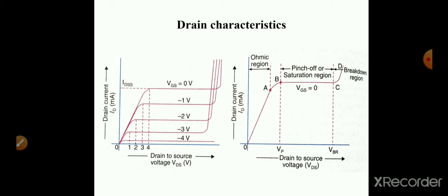Curve AB obeys the inverse square law rate — when voltage increases, current increases slowly. At point B, pinch-off occurs and constant current flows. From B to C is the saturation region or pinch-off region, where constant current flows. When we increase the drain-source voltage further, at point C, breakdown occurs and a large amount of current suddenly flows. The breakdown at point C is mainly due to the avalanche effect.